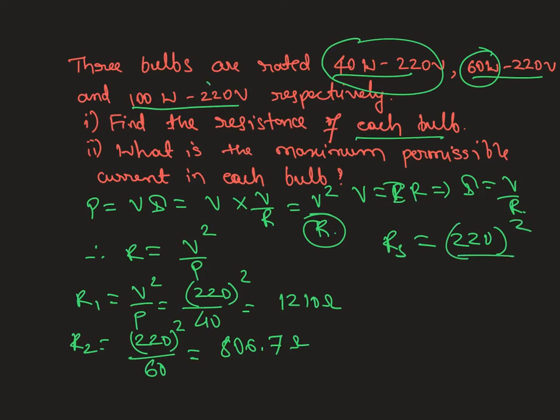For R2, it's 220² divided by 60W. Simplifying, you will get R2 = 806.67Ω. So these are the values of resistances R1, R2, and R3.